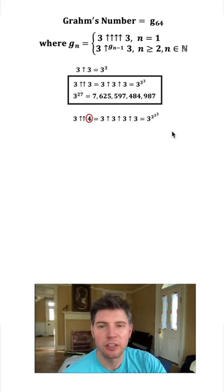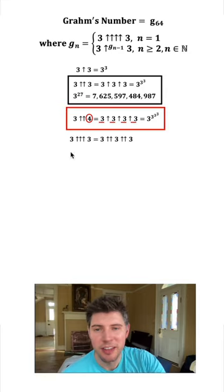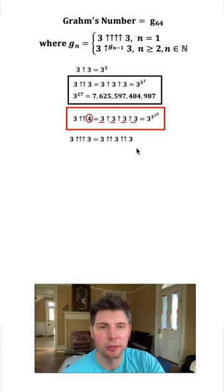And just to clarify, this 4 right here is counting how many 3s that we have. That's what that means. And then 3, 3 up arrows 3 is equal to 3, 2 up arrows 3, 2 up arrows 3. Once again, this 3 tells us there's 3 of those.